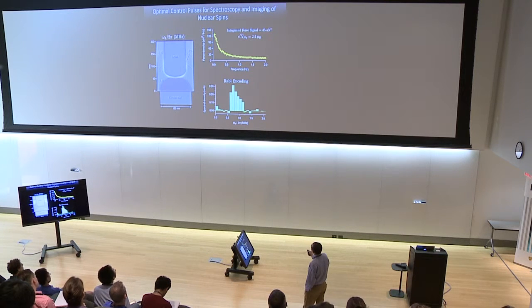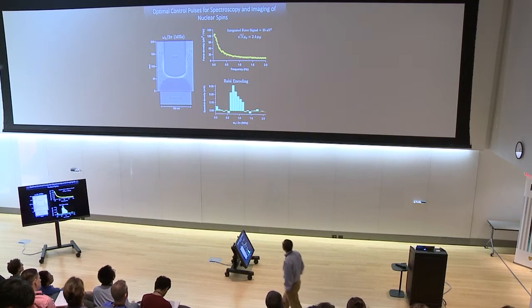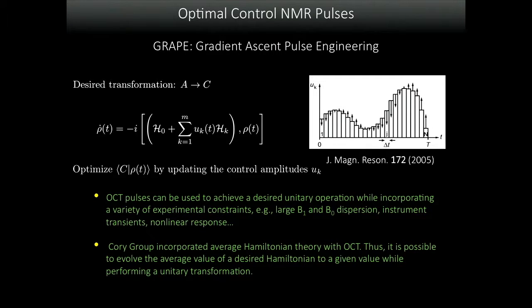The frequencies extend from 1.2 megahertz down to about 600 kilohertz. This is very challenging because you can't apply a pi over 2 pulse or a pi pulse when you have a factor 2 variation in your Rabi field. This is where the optimal control ideas come in. Optimal control was introduced in NMR in 2005 and is quickly picking up speed.